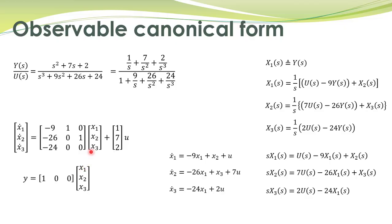This particular state space representation is called observable canonical form representation. Notice the special structure of the system matrix: there are 1s, all entries 0, and in the first column the coefficients appear with a negative sign. Previously, we obtained another representation — the controllable canonical form — which also had a special structure of matrices A and B. This one is called observable canonical form representation.